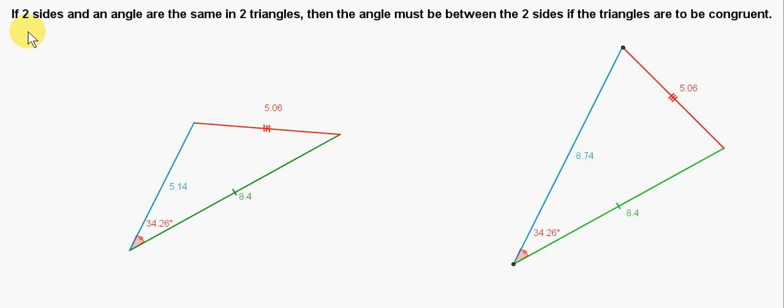So the key point is that if two sides and an angle are the same in two triangles, as they are here, then the angle must be between the two sides if the triangles are to be congruent.